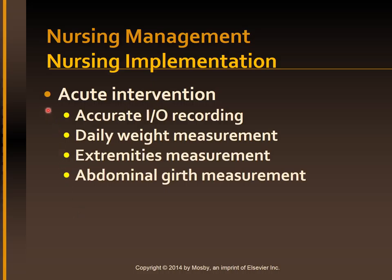Edema and ascites are frequent manifestations of cirrhosis and necessitate nursing assessments and interventions. Accurate calculation and recording of intake and output, daily weights, and measurements of extremities and abdominal girth help in the ongoing assessment of the location and extent of edema. The abdomen should be marked with permanent markers so that abdominal girth is measured at the same location each time.